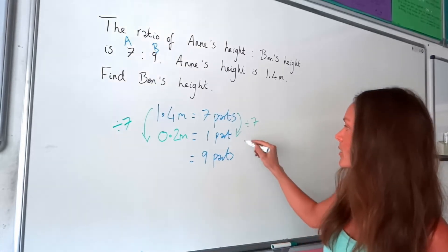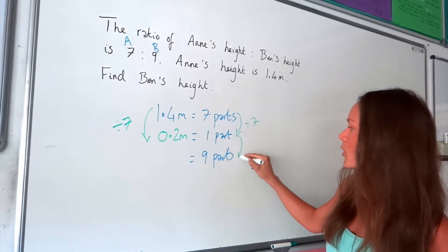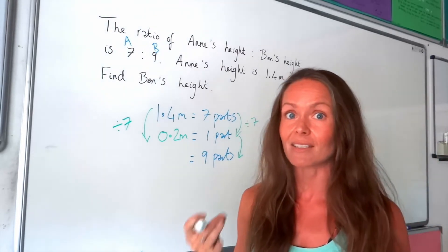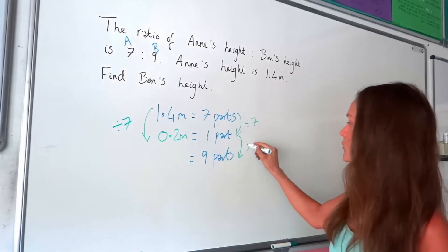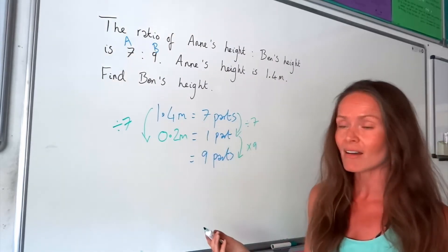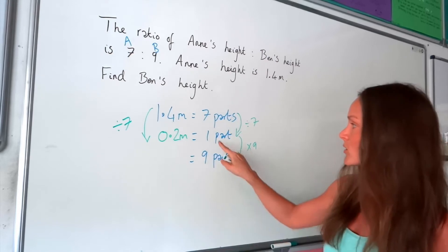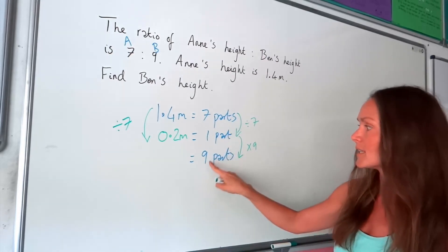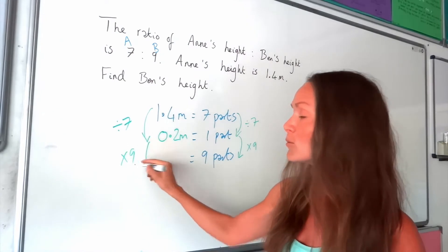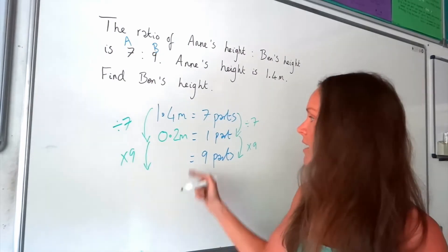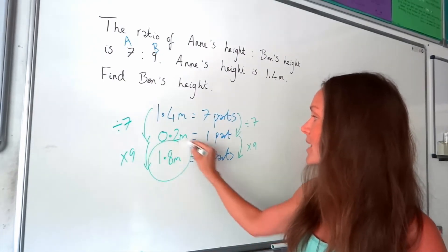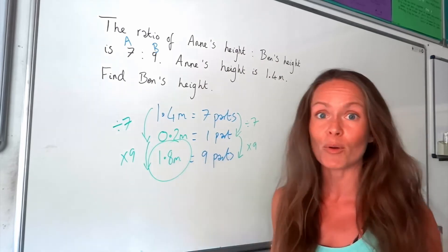The last step is to work out Ben's height. Ben's height is nine parts, so we multiply that answer by nine, because one part multiplied by nine gives nine parts. So multiplying 0.2 by nine gives 1.8. So Ben's height is 1.8 metres.